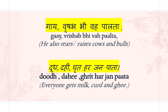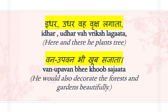The Ri Matra words here are Vrishabh and Ghrit. Idhar udhar vah vriksh lagata — here and there he plants trees. Van upavan bhi khoob sajata — he also decorates the forest and gardens beautifully. The Krishak plants trees here and there, and in doing so decorates the forest and garden. The Ri Matra word in this section is Vriksha. Sajata means decorate.